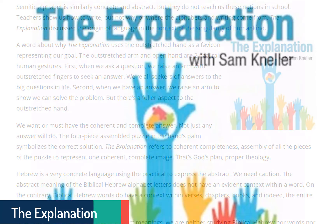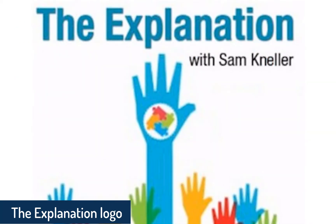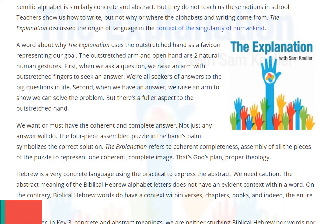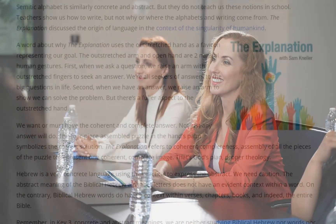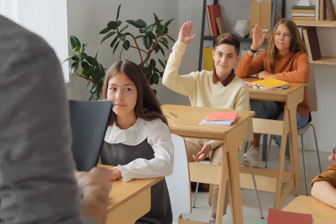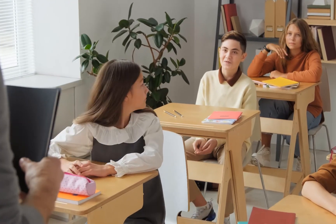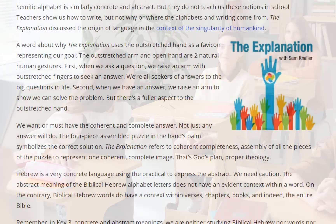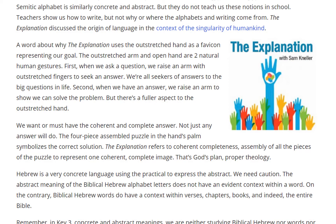A word about why The Explanation uses the outstretched hand as a favicon representing our goal. The outstretched arm and open hand are two natural human gestures. First, when we ask a question, we raise an arm with outstretched fingers to seek an answer — we're all seekers of answers to the big questions in life. Second, when we have an answer, we raise an arm to show we can solve the problem. The four-piece assembled puzzle in the hand's palm symbolizes the correct solution.